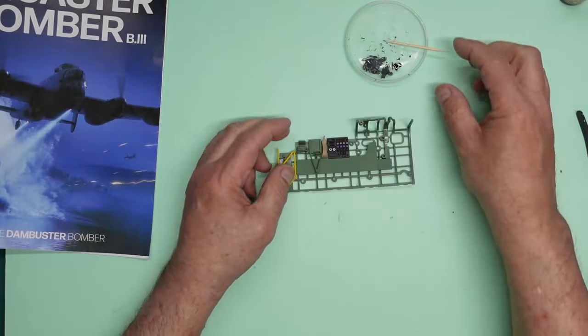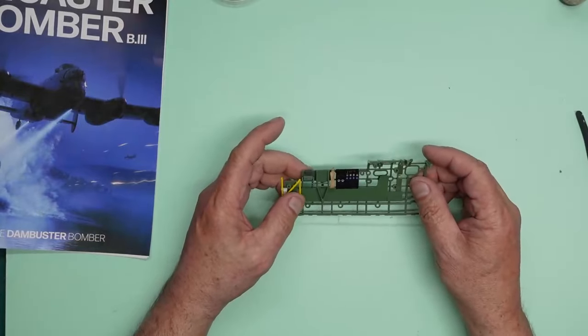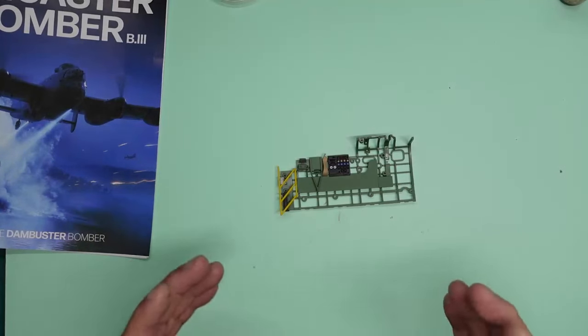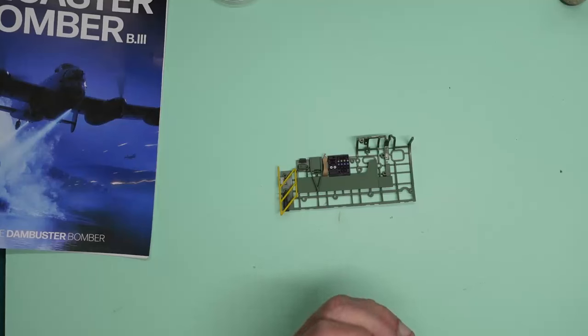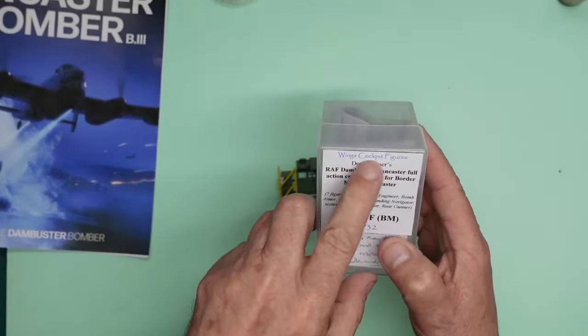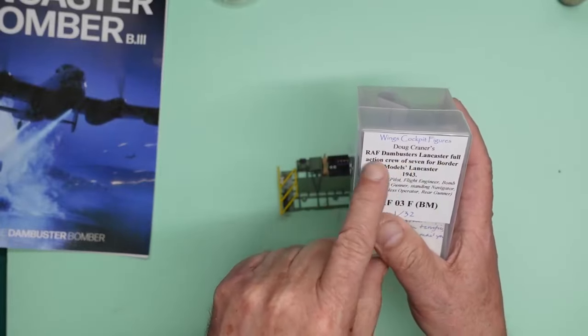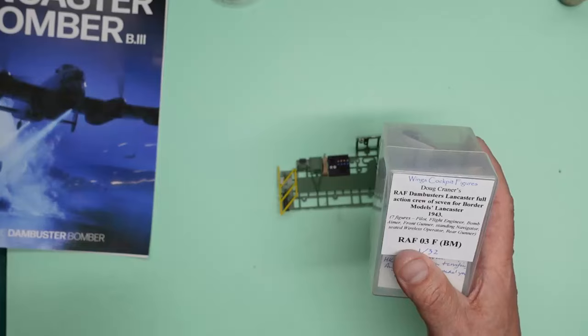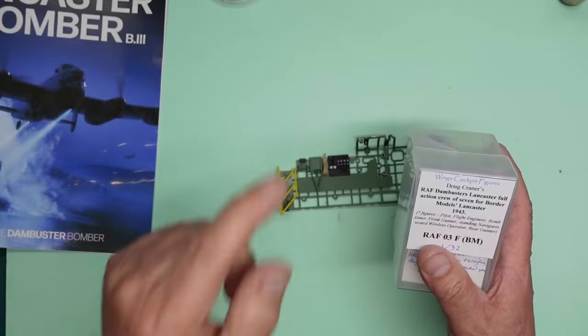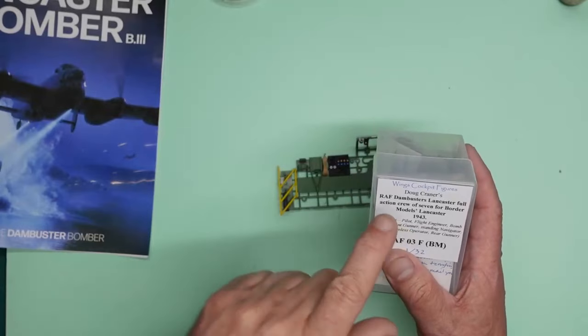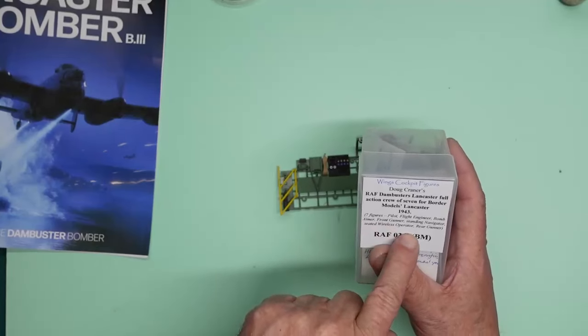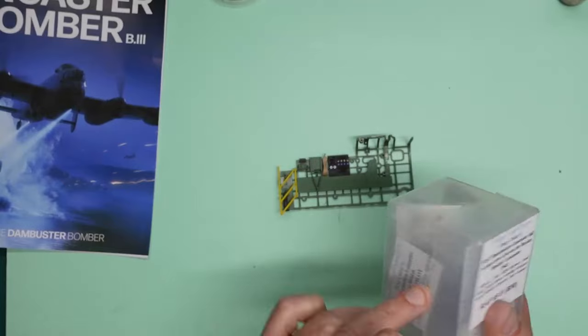But as you can see, with the level of detail going in here, it's quite stunning. Just a quick word. And I'm going to say this. I'm going to repeat myself in a couple of videos. You saw me review the David Allen cockpit figures, if you follow my channel. They're sculpted by Doug Craner. This is the RAF Dambuster Lancaster. Full action crew of seven for Border Models Lancaster. So you have the pilot, the flight engineer standing next to the pilot with his hands on the controls. You have a bomb aimer led in the front with his aiming device in his hand. You have the front gunner sat in the gun, firing his gun. Standing navigator looking out of the window on the side. And then you have the seated wireless operator and you have the rear gunner. Now these figures are absolutely stunning.